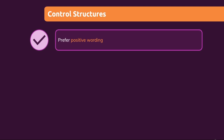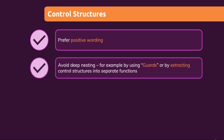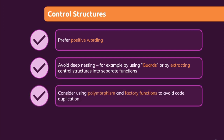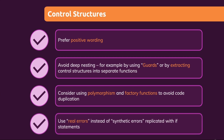When using control structures, one suggestion is to use positive wording if possible and if it makes sense. Avoid deep nesting — for example, by using guard clauses: if checks at the beginning of a function which cancel execution early if some condition is not met. Or avoid deep nesting by extracting logic and control structures into separate functions. Consider using polymorphism and factory functions to avoid code duplication. And use real errors instead of synthetic errors replicated with if statements — this is also a key part of writing clean code.